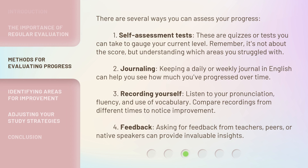There are several ways you can assess your progress. 1. Self-assessment tests — these are quizzes or tests you can take to gauge your current level. Remember, it's not about the score, but understanding which areas you struggled with. 2. Journaling — keeping a daily or weekly journal in English can help you see how much you've progressed over time. 3. Recording yourself — listen to your pronunciation, fluency, and use of vocabulary, and compare recordings from different times to notice improvement. 4. Feedback — asking for feedback from teachers, peers, or native speakers can provide invaluable insights.